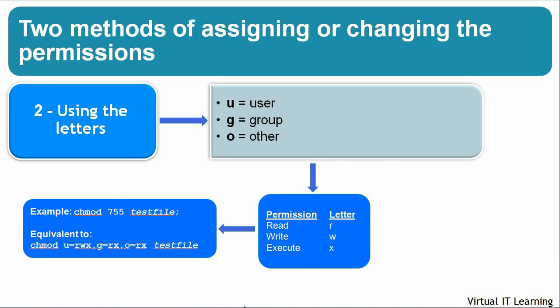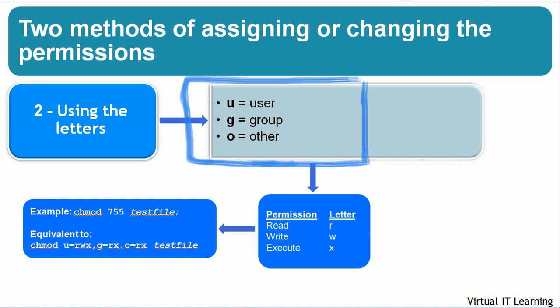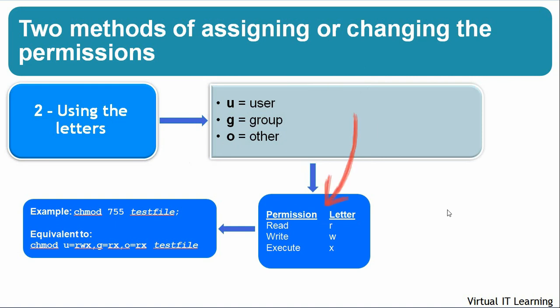The other mode for chmod uses letters such as u, g, and o, rather than the numeric octal system. When assigning permissions, u represents the owner of the file, g represents all users who are members of the group the file belongs to, and o represents all users that are neither a group member nor the owner. Similarly, you can use letters for permissions: r for read, w for write, and x for execute.